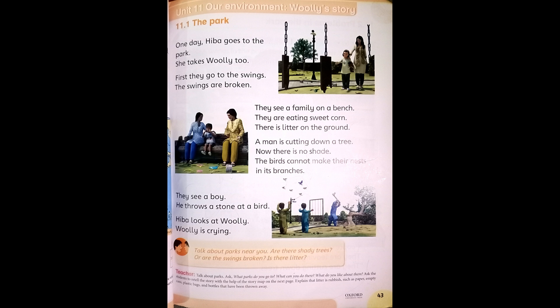Hiba looks at Wuli. Wuli is crying. When Wuli sees the boy throwing a stone at the bird, he starts crying.